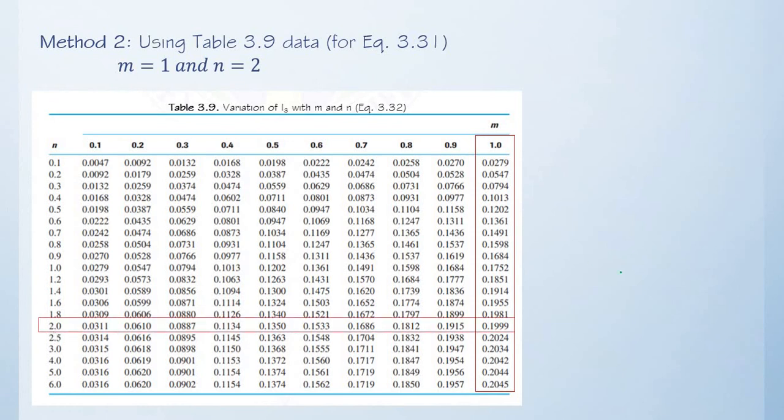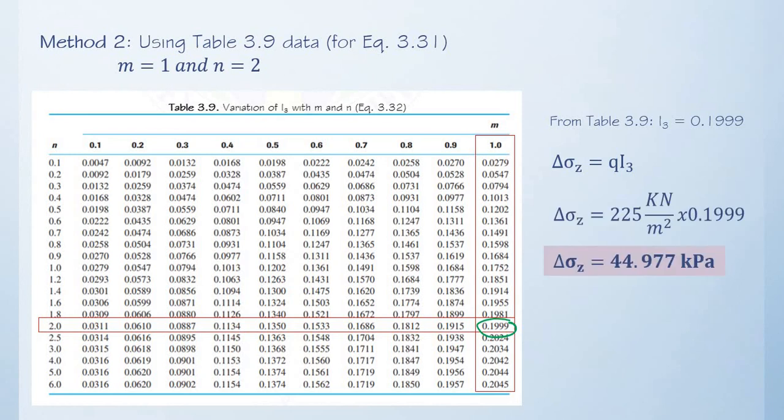The two intersect together at this point. This now becomes our value of I₃, which is the same as that of the value that came out from using the equation. Therefore, we expect that we will be coming up with exactly the same value of vertical stress, which is 44.977 kilopascal.